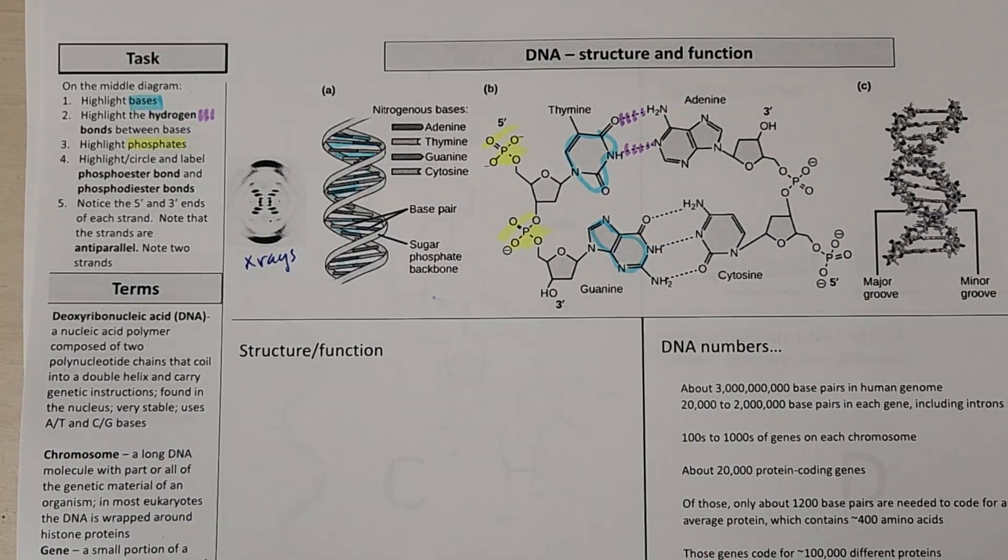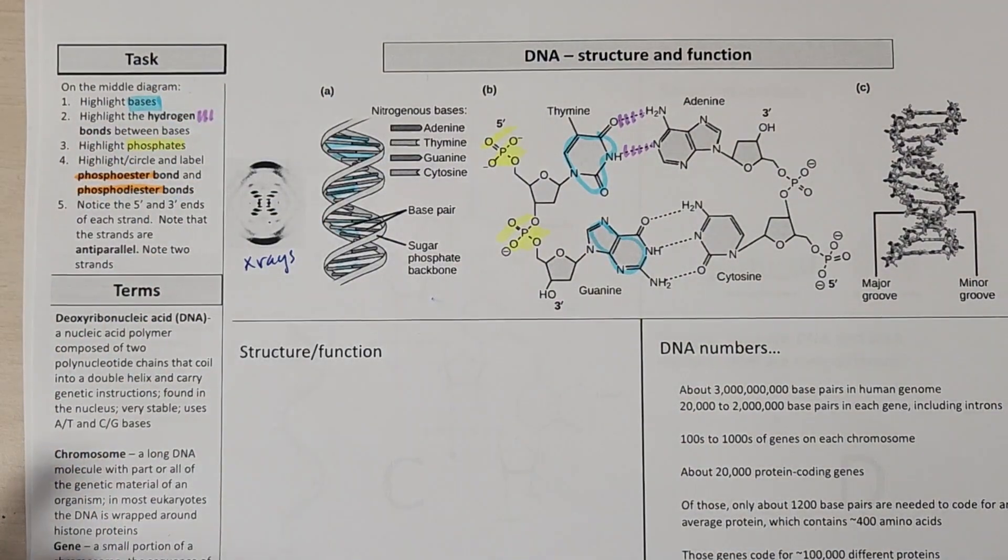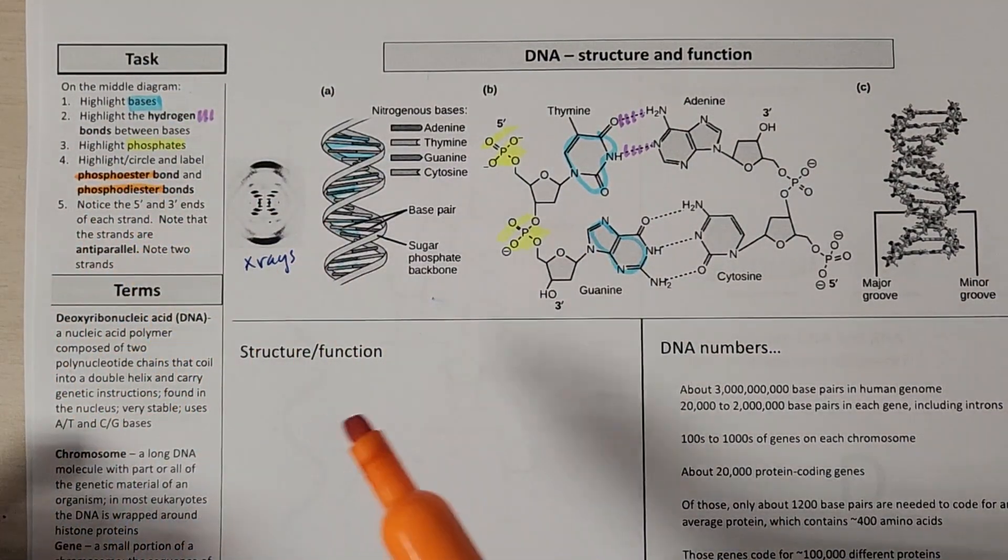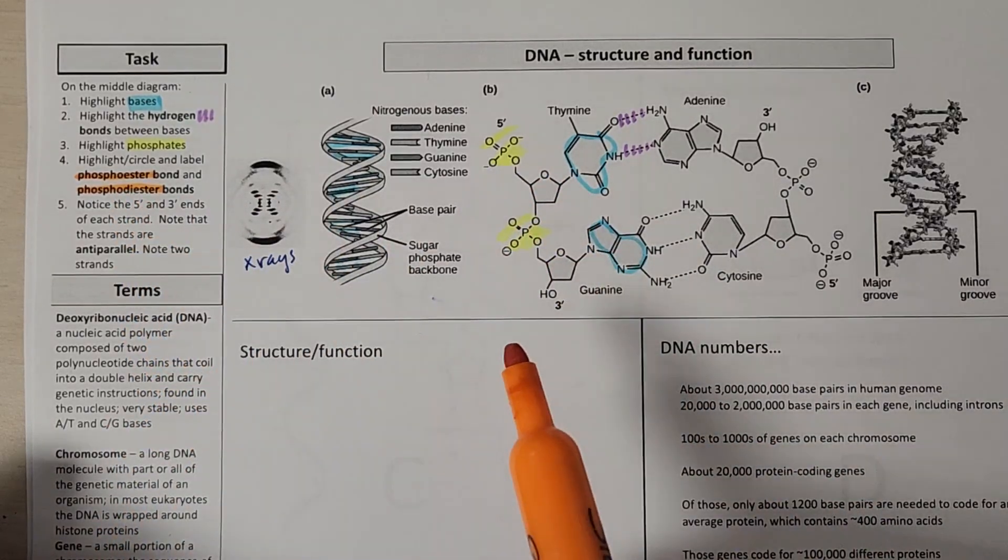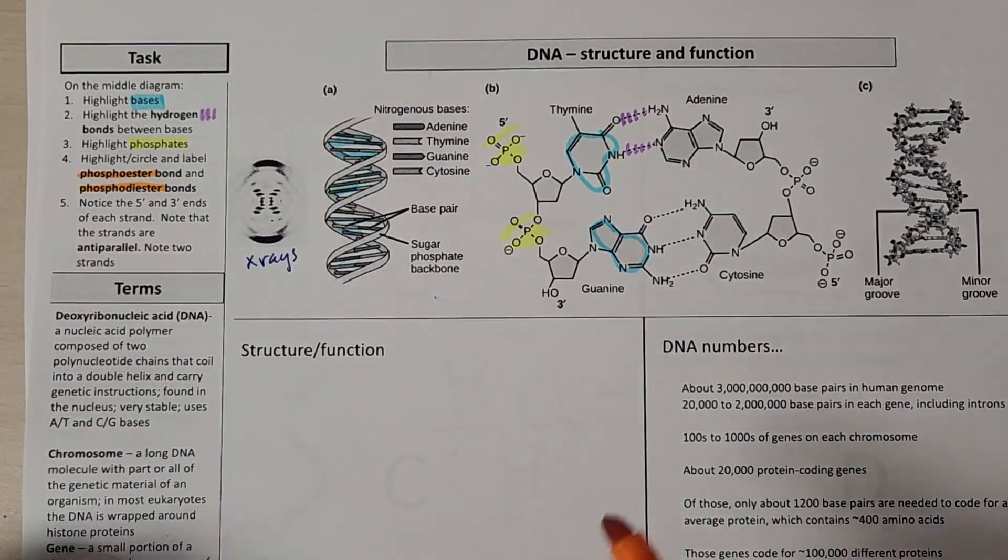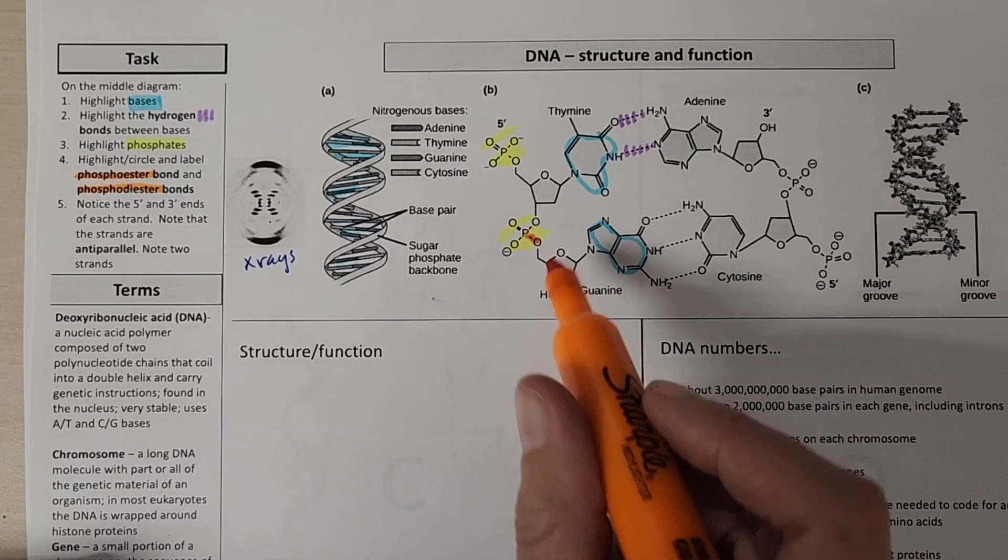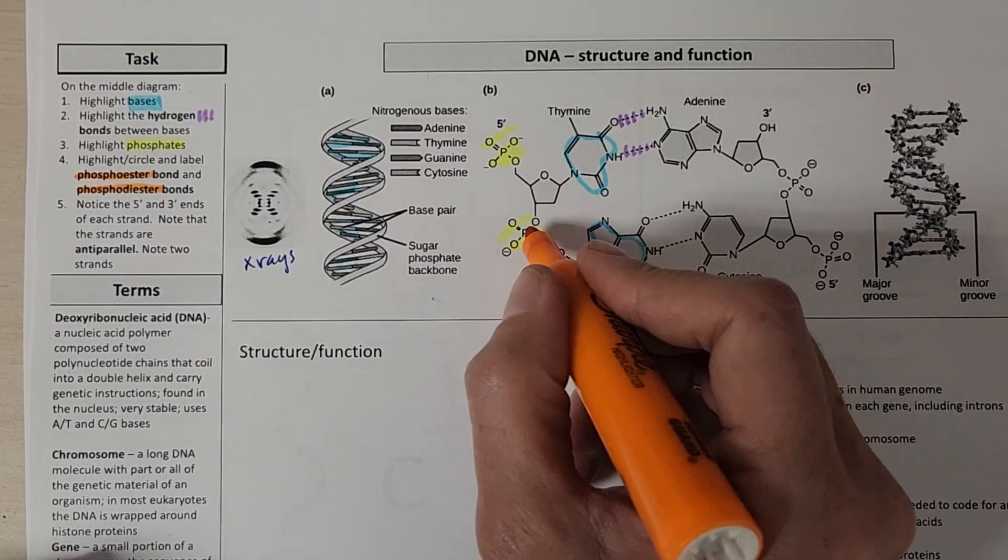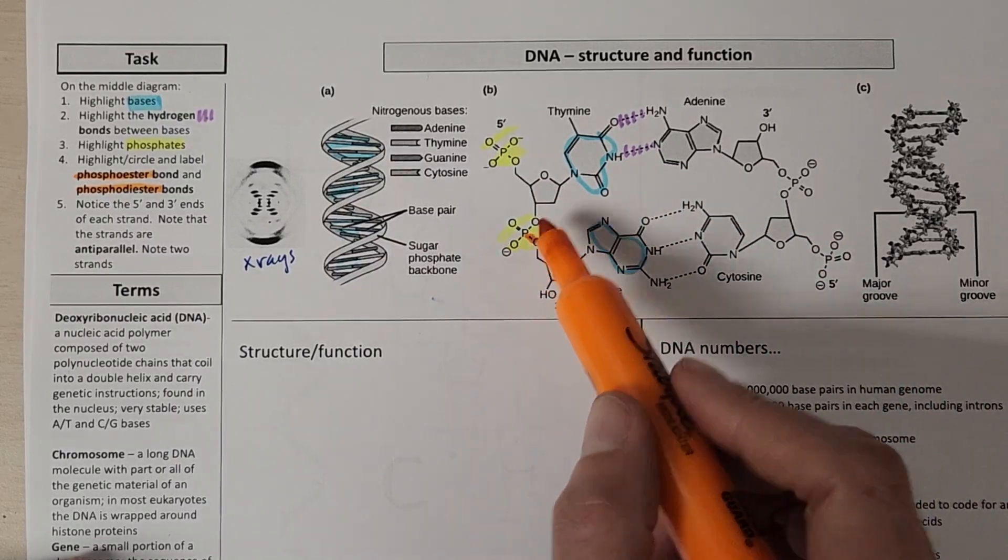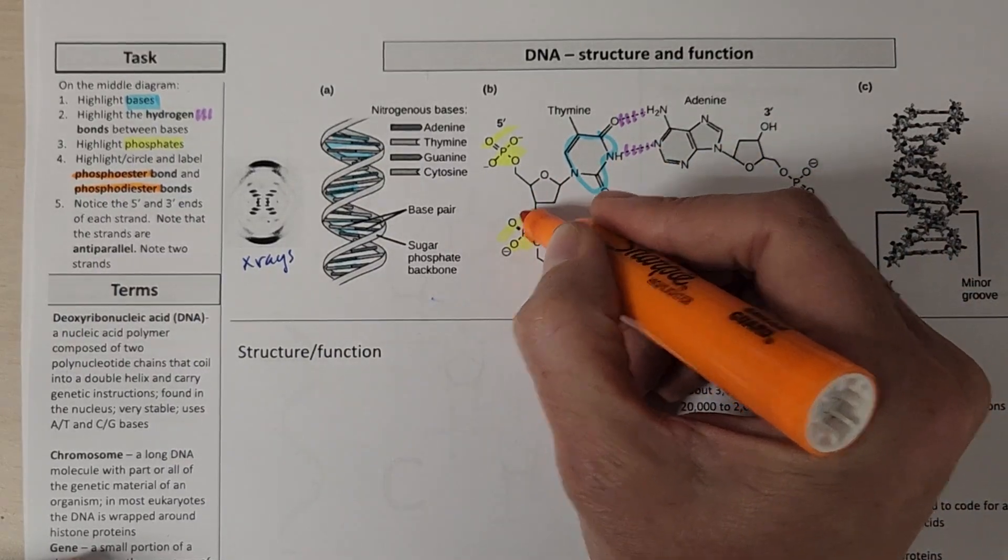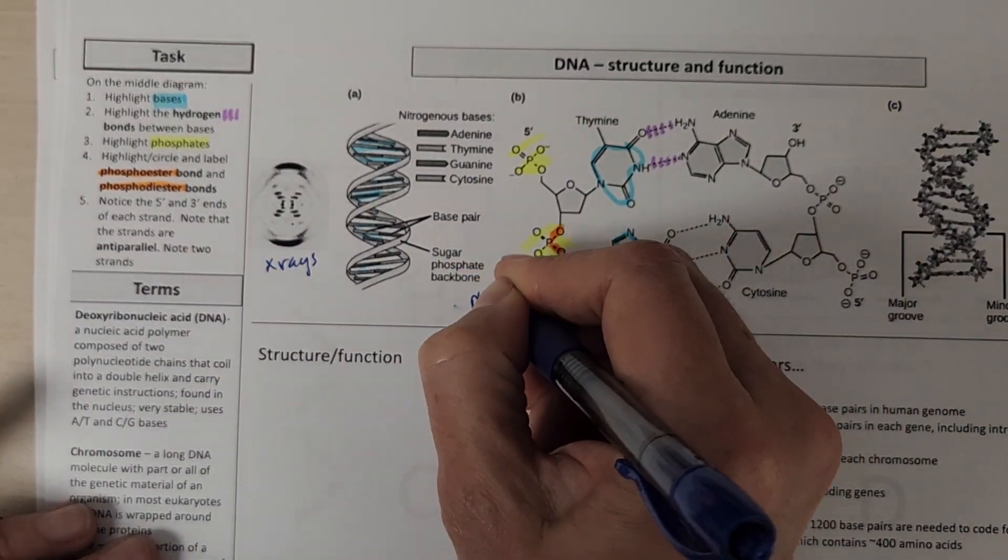And then we can find phosphoester and phosphodiester bonds. Phosphoester, we're connecting a phosphate to a sugar. Phosphodiester is gonna be a sugar that's connected out to two phosphates. So here's a phosphate that's connected just to one sugar. This is a phosphoester here. Here is, oh sorry, no. It's connected to two sugars, right? One above it, one below it. And so this is what we would call a phosphodiester.